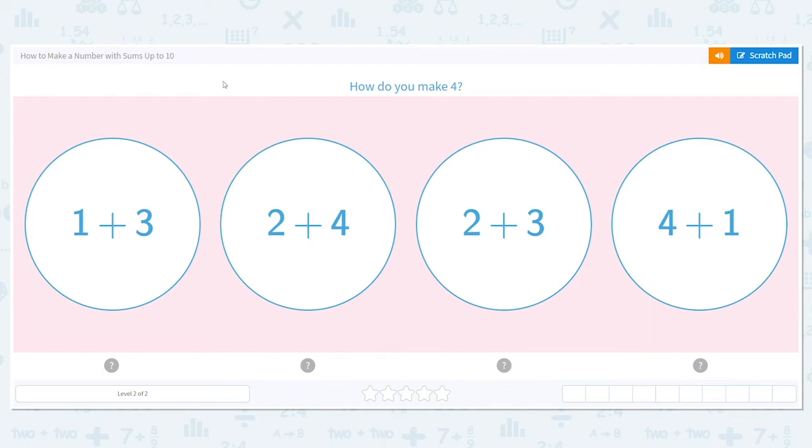Today we're going to be making numbers with sums up to 10. Our first question says, how do we make 4? I have four different addition problems here and I need to pick the one that equals 4. Looking at our first answer choice, it says 1+3. What is 1+3? It's 4, so that means that's our answer.